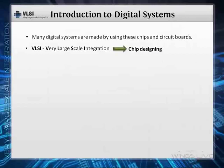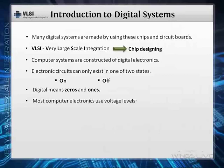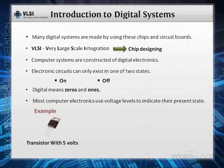We have come to know that computer systems are constructed of digital electronics, meaning their electronic circuits can only exist in one of two states — they're either on or they're off. As we discussed earlier, digital means zeros and ones. Most computer electronics use voltage levels to indicate their present state. For example, a transistor with five volts would be considered on, while a transistor with no voltage would be considered off.